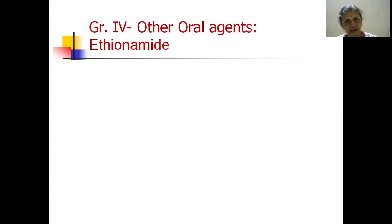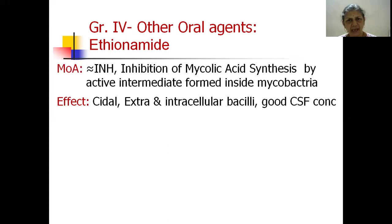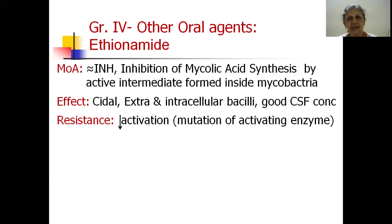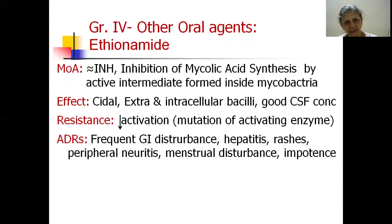From Group 4, other oral agents, we will study three. The first is ethionamide, which like INH inhibits mycolic acid synthesis by forming an active intermediate inside the mycobacteria. It interacts with the same proteins involved in INH's mechanism and comes into use when INH is not working. It is bactericidal against extracellular as well as intracellular bacilli and gives good CSF concentration, so it can be used for TB meningitis. Resistance occurs by reduction in activation of the drug via mutation of the gene coding for the activating enzyme. Adverse drug reactions can be frequent: GI disturbance, hepatitis, rashes, peripheral neuritis, menstrual disturbances, and impotence.